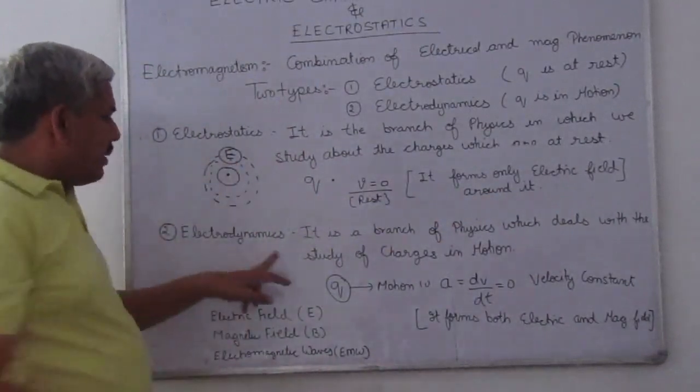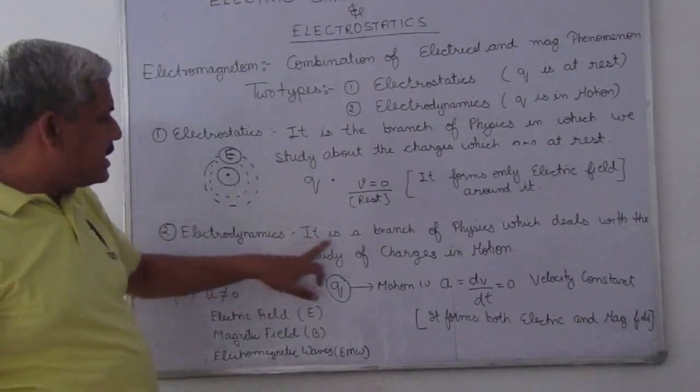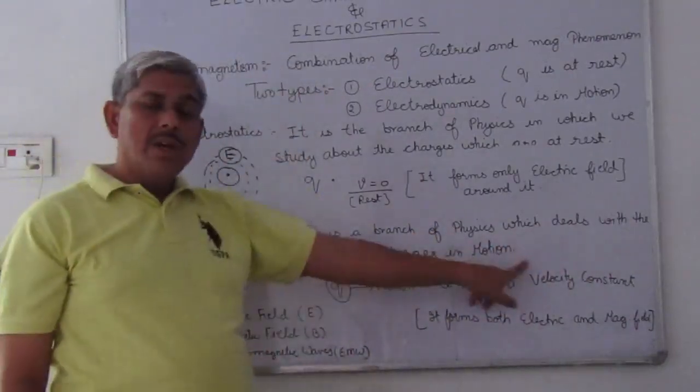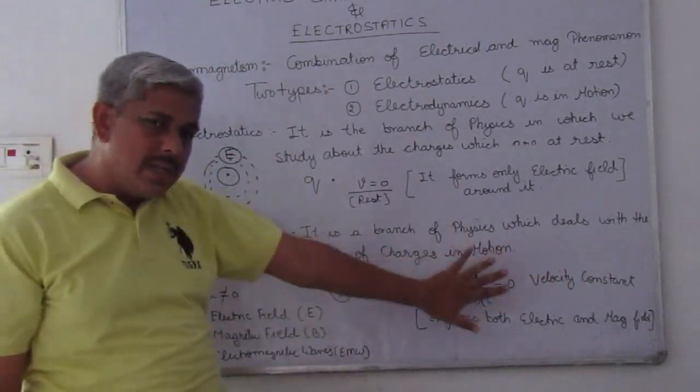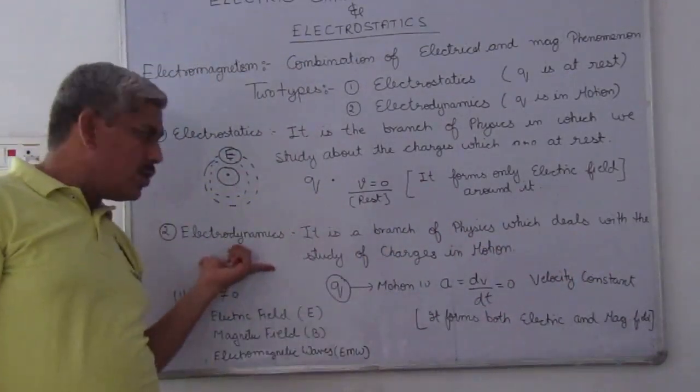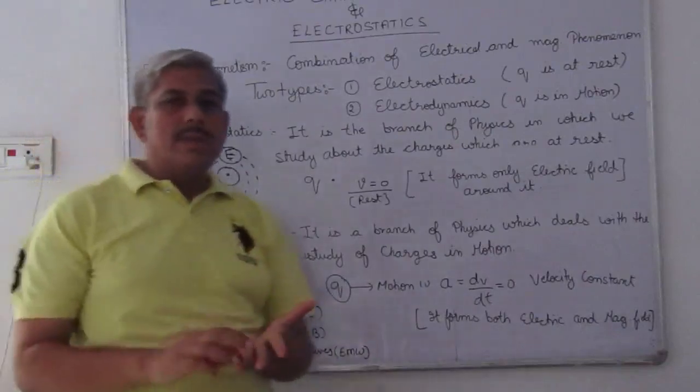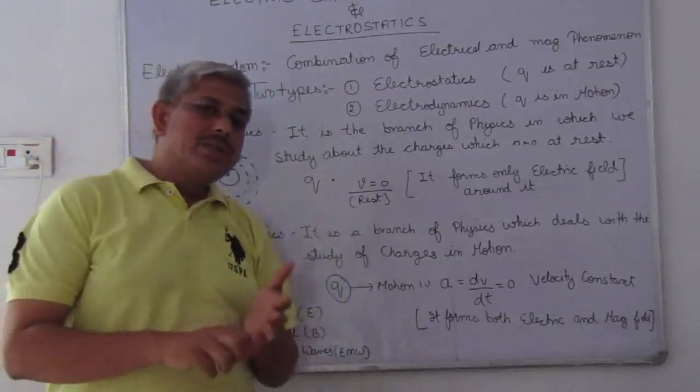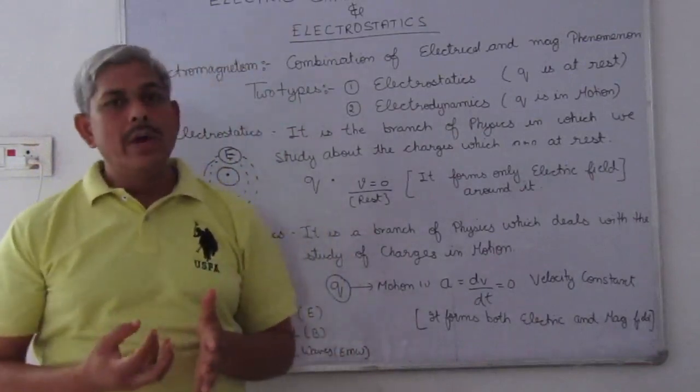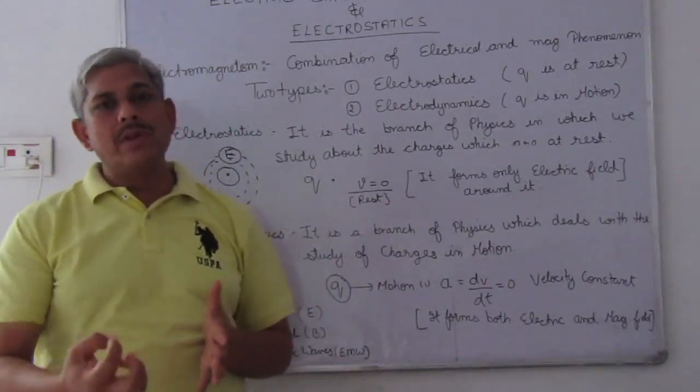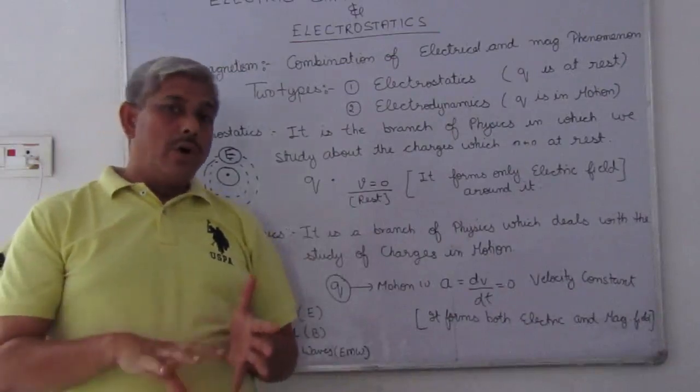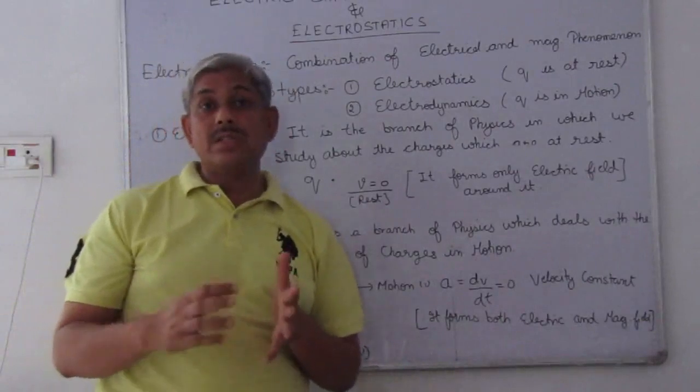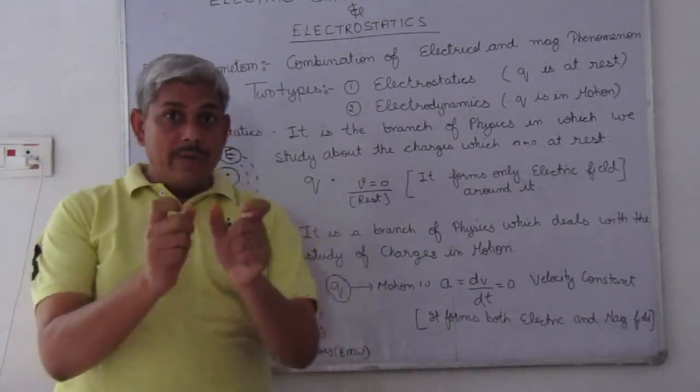In the same way, electrodynamics - it is a branch of physics which deals with the study of charge in motion. Now, in motion we have two conditions: either the acceleration is zero, meaning velocity remains constant, or acceleration is not equal to zero, meaning velocity is not constant. So we have two types of conditions.